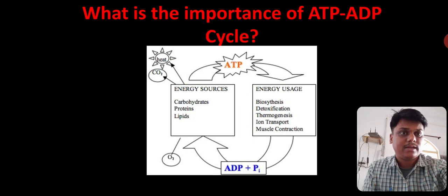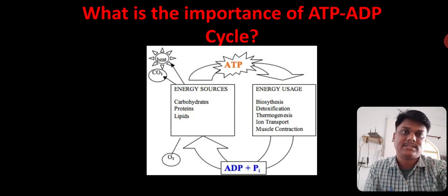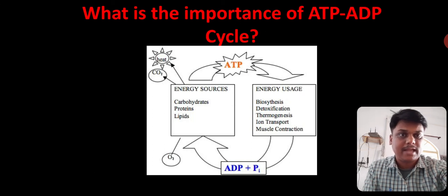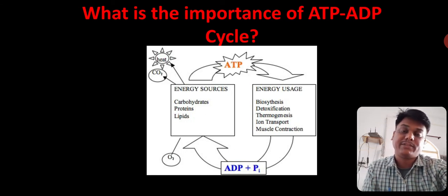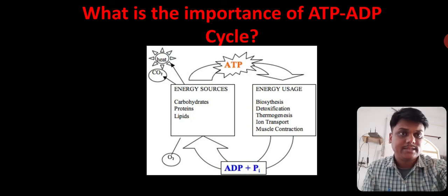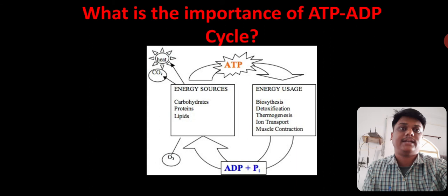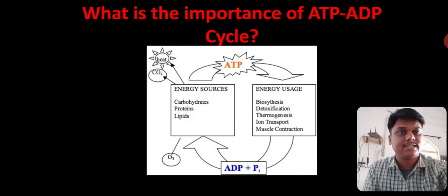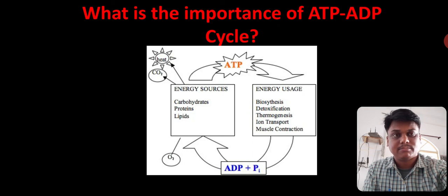ATP gives its energy for these energy purposes. And from where this energy comes? That is, it comes actually from the energy source, that is what we eat. That is carbohydrates, proteins, lipids that will give the energy. And that energy is utilized to form ATP. And when ATP is formed inside the body, that energy currency, that money is utilized for various biological activities by the cell.